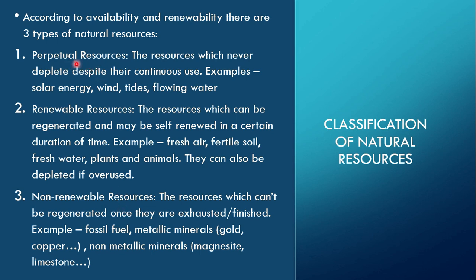Looking at the examples: perpetual resources include solar energy, wind, tides, and flowing water. Renewable resources include fresh air, fertile soil, fresh water, and plants and animals. Non-renewable resources include fossil fuels, metallic minerals like gold and copper, and non-metallic minerals like magnesite and limestone. Please look at these examples and think carefully about the differences between perpetual, renewable, and non-renewable resources.